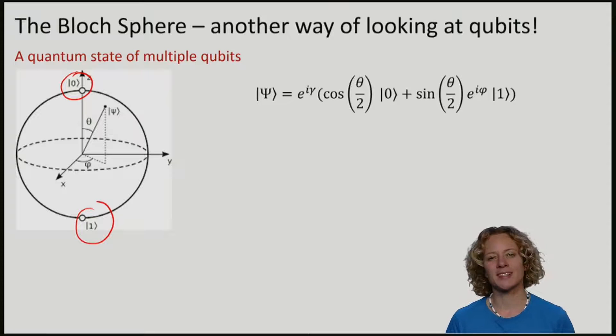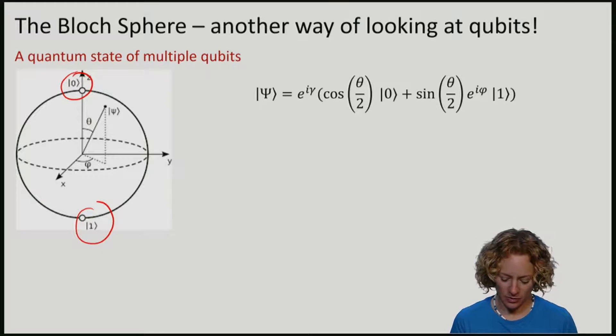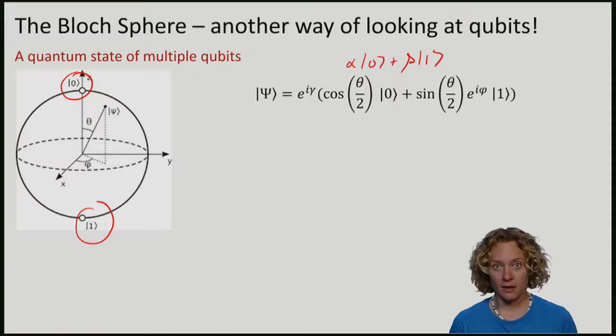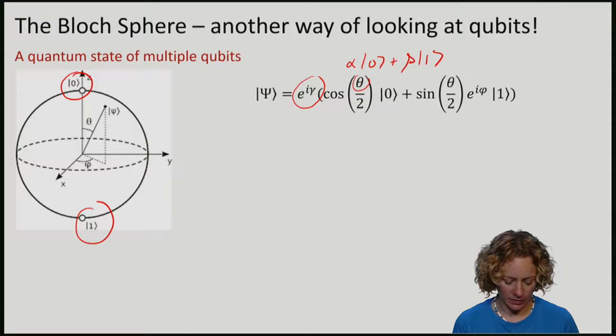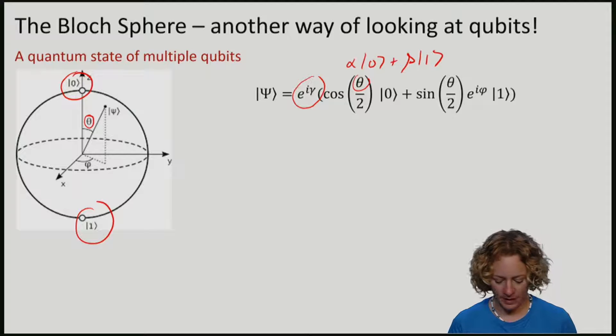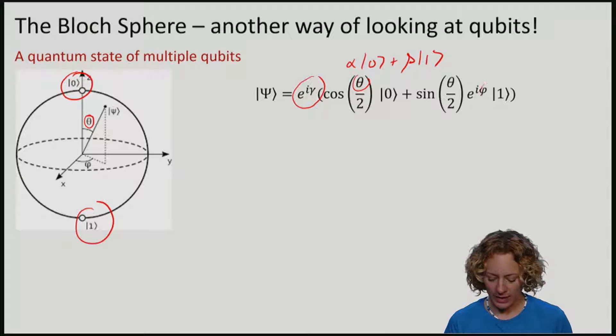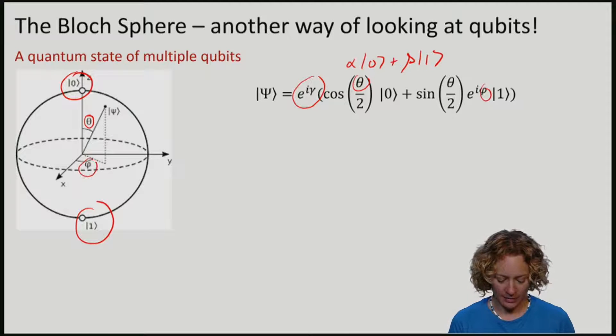Let's now expand our state. Instead of writing it as usual in terms of complex numbers alpha and beta, we will write out such states in terms of a global phase, e to the i times gamma, an angle theta away from the z-axis and an angle phi away from the x-axis.